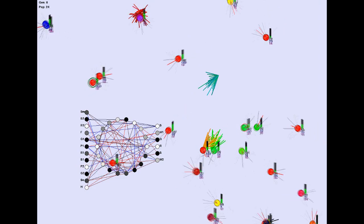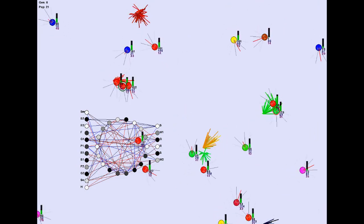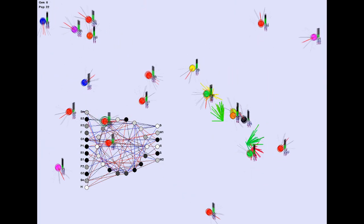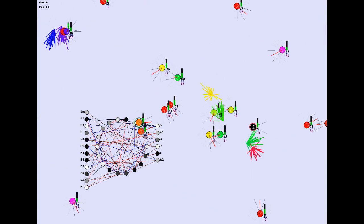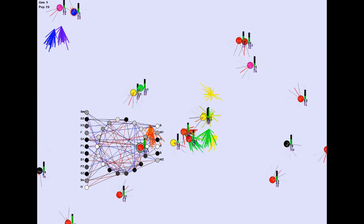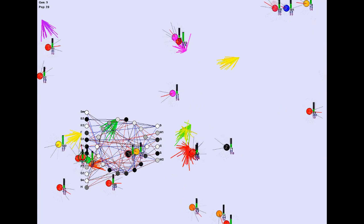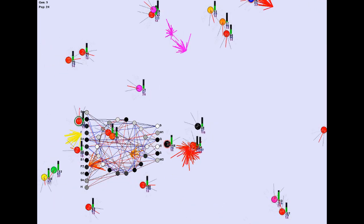My last simulation used recurrent spiking neural networks to model the brain of every organism. However, since then I found that multilayer perceptron model gave much better results. At the end, the best results were obtained by using multilayer perceptron with one hidden layer that is allowed to form recurrent connections. You can see the neural network of some selected bot on the bottom left.